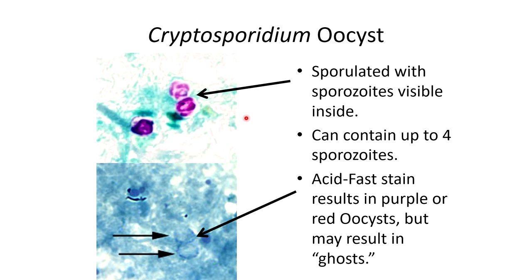Here's an image showing Cryptosporidium oocysts — the sporulated oocysts stained in purple. Something that can occur with Cryptosporidium when using an acid-fast stain is that some oocysts don't take up the stain for unknown reasons; they're referred to as ghosts. Sometimes they do stain, and sometimes they don't. Oocysts can contain up to four sporozoites inside them, and the sporozoites are what stain purple.